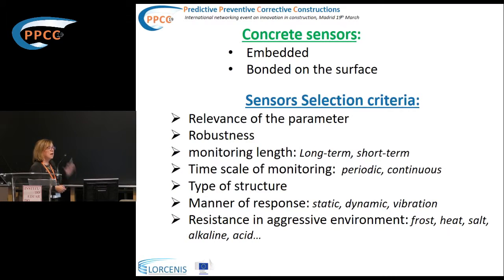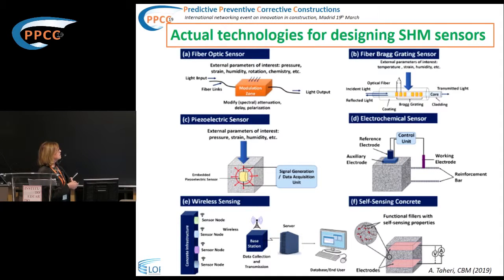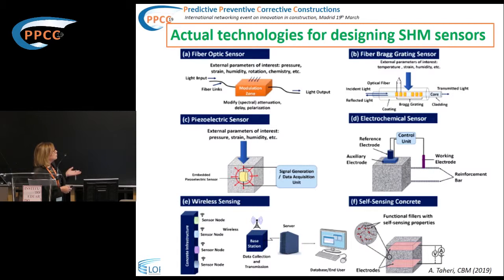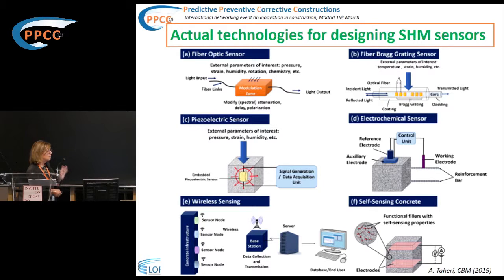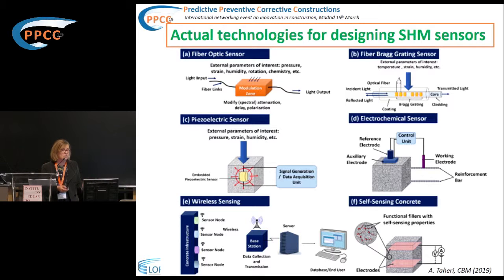There are existing fiber optic sensors to measure mainly strain, but also temperature and humidity. Fiber Bragg grating sensors also measure strain and temperature. Piezoelectric sensors measure similar parameters. Electrochemical sensors are well known for measuring corrosion performance. Wireless sensors embedded on the surface need a base station for remote data collection and analysis. Finally, there is another group — self-sensing concrete — where we look for the structure itself to be a sensor and report on its own performance.